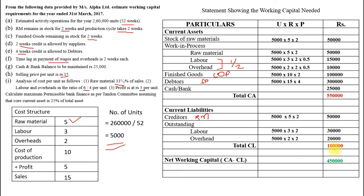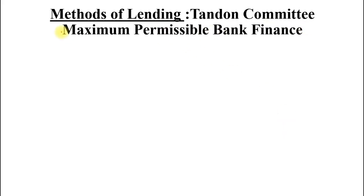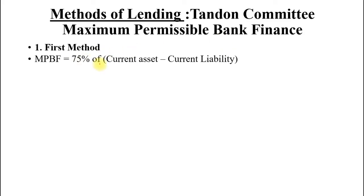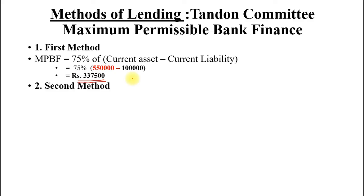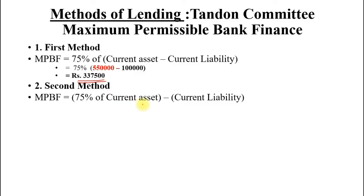Now let us find the maximum permissible bank finance (MPBF) as per the Tandon Committee. Current assets = 5,50,000; current liabilities = 1,00,000. Method 1: 75% of (CA − CL) = 75% of (5,50,000 − 1,00,000) = 75% of 4,50,000 = 3,37,500. Method 2: 75% of CA minus CL = (75% of 5,50,000) − 1,00,000 = 3,12,500.